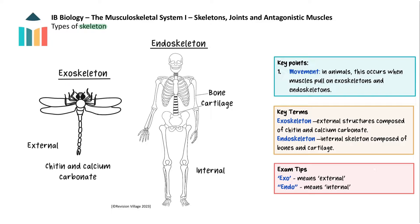Exoskeletons are found in arthropods like insects and crustaceans, and they are external structures that provide support and protection. They are composed of chitin and calcium carbonate. Muscles attached to these exoskeletons contract, causing the limbs to move.